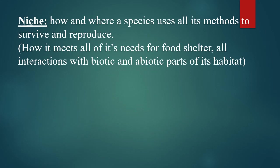Our next word is the term niche. There's really no correct way of saying it one way or the other. It's how and where a species uses all the methods at its disposal to help it survive and reproduce — how it meets all of its needs for food, shelter, and all its interactions with the biotic and abiotic parts of its habitat. A niche is very specific for each creature in an ecosystem.